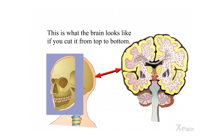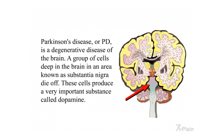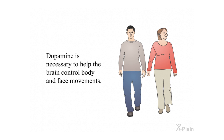Symptoms and their causes. This is what the brain looks like if you cut it from top to bottom. Parkinson's disease, or PD, is a degenerative disease of the brain. A group of cells deep in the brain in an area known as the substantia nigra die off. These cells produce a very important substance called dopamine, which is necessary to help the brain control body and face movements.